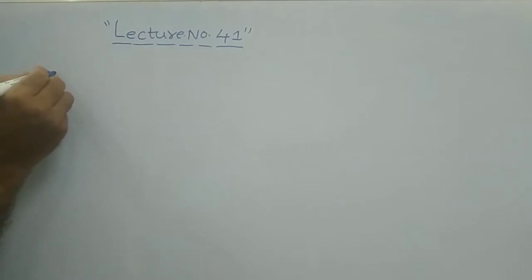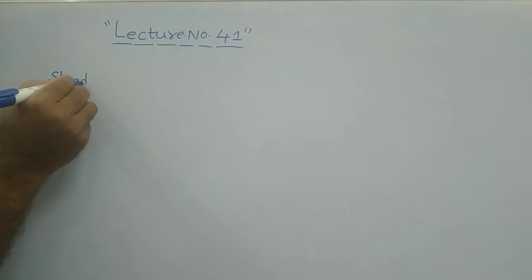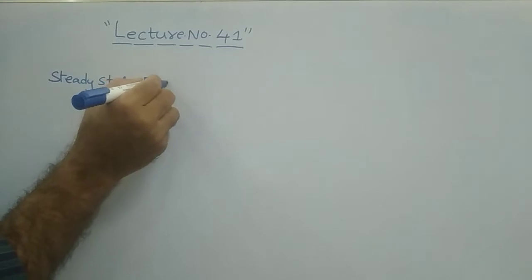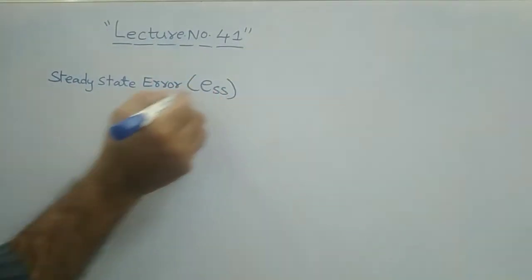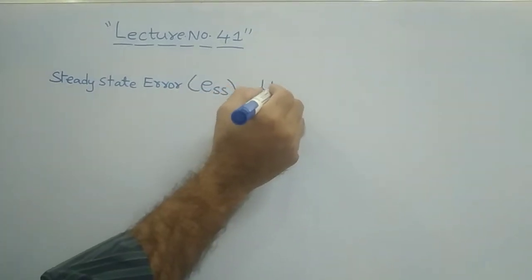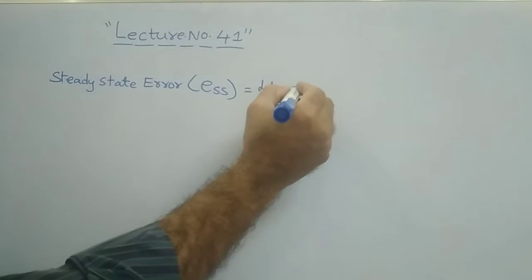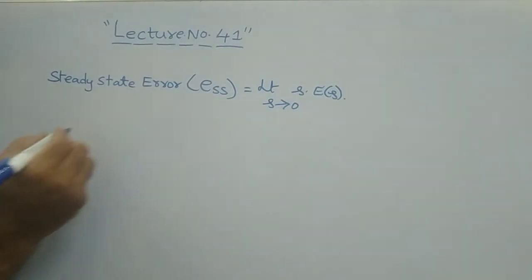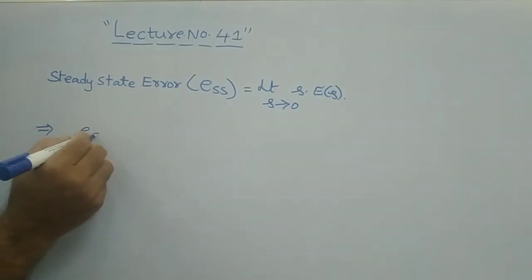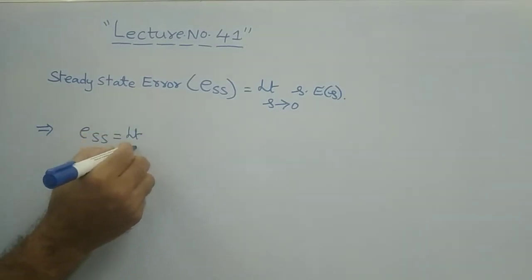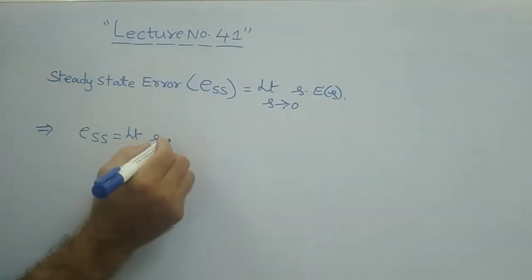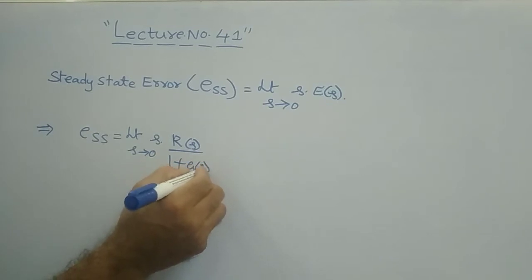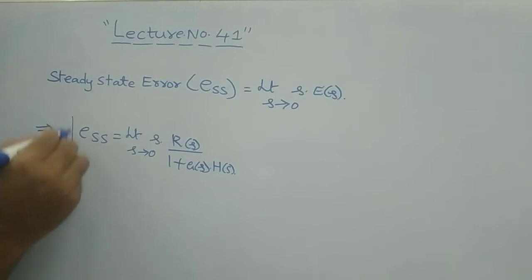Let us recall the definition of steady state error. The steady state error is denoted by e subscript ss and is given as: limit as s tends to 0 of s times E(s). This can be written as e_ss equals limit s tends to 0 of s times R(s) divided by 1 plus G(s)H(s). We must remember these expressions, as this is an expression-related subject.